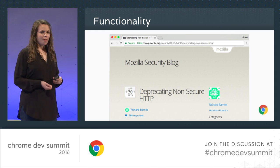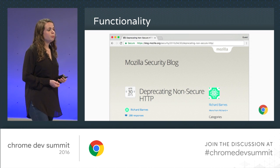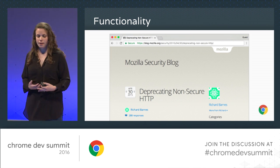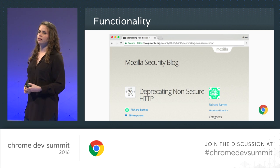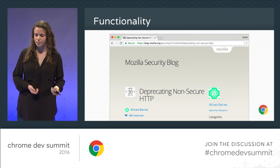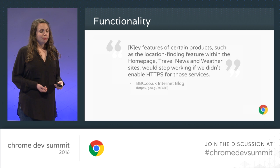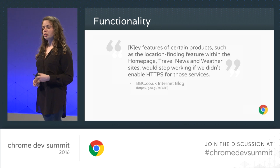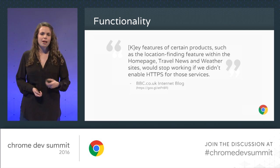Chrome is not the only browser doing this. Firefox announced that they are eventually planning to require HTTPS for all new features. This is something that browsers are pretty much united around — if you're going to grant access to privacy-sensitive information or a powerful feature, the user should know which website they're granting that access to. The BBC cited these restrictions on powerful features as one of the reasons they decided to move BBC.co.uk to HTTPS earlier this year.